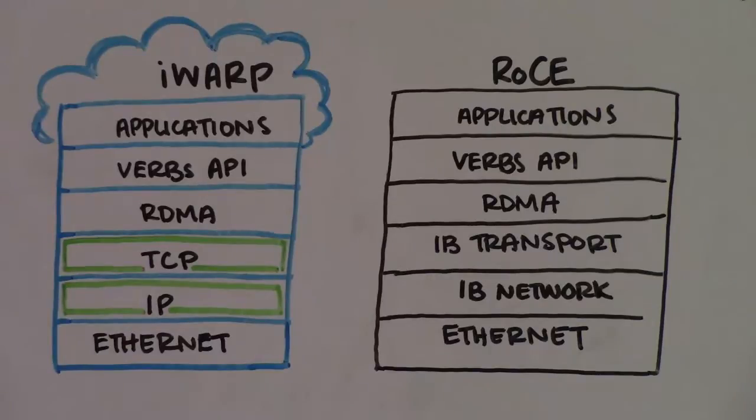Although RoCE uses the physical layer and the media access layer from Ethernet, it differs by building an InfiniBand network and transport layer on top of them. So RoCE has to reinvent all the richness of TCP/IP from scratch.